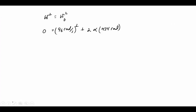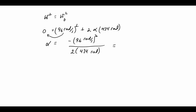From that equation, alpha equals negative 96 squared divided by 2 times 434 radians, giving alpha equal to negative 10.6 radians per second squared. That answers part c — the angular acceleration during the second phase. The negative sign confirms deceleration.